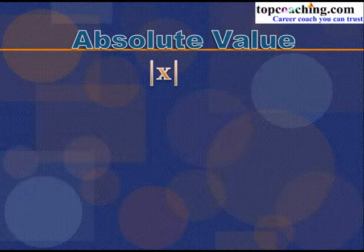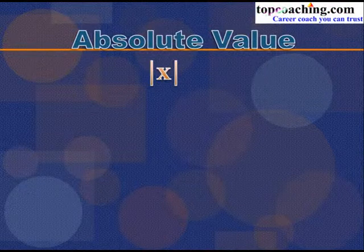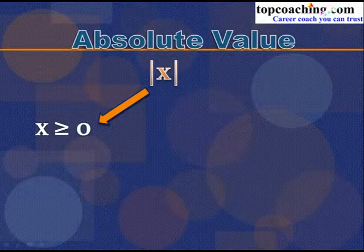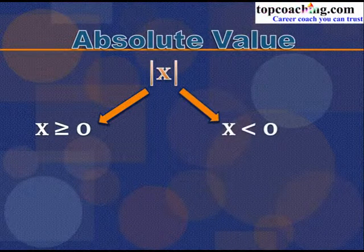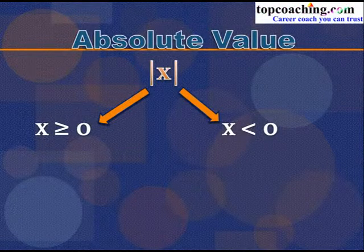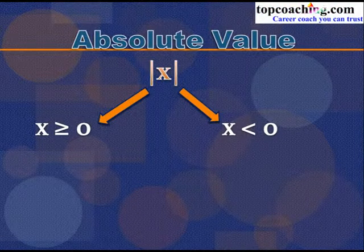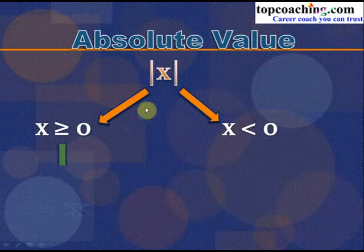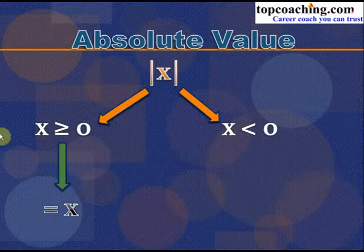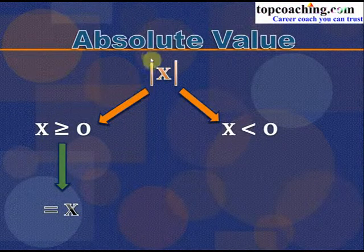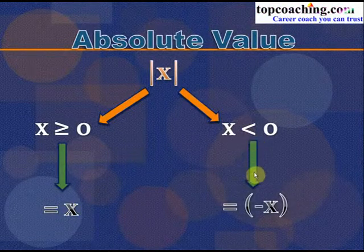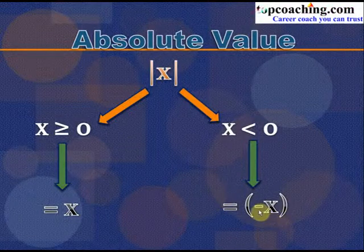Mathematically, there are two cases: either x ≥ 0, in which case |x| = x; or x < 0, in which case |x| = −x. That is the definition of absolute value of x.